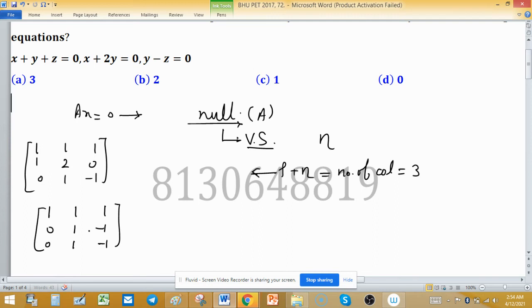Whenever you have two rows either in the same proportion or the same, cancel one row. So the rank of this matrix A is 2. Therefore, nullity is 1.